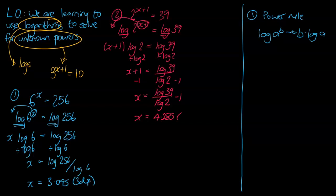When you put that all into your calculator, you should get 4.285, rounded to 3 decimal places. That's a continuation of the power rule that we've learned.